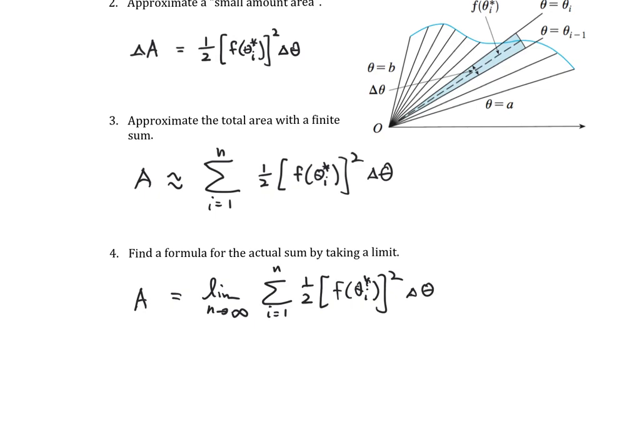We know that sigma is the Greek letter for s, delta is the Greek letter for d. So I can rewrite this limit as an integral, the integral of one half f of theta squared d theta. We're going to be going from a to b.